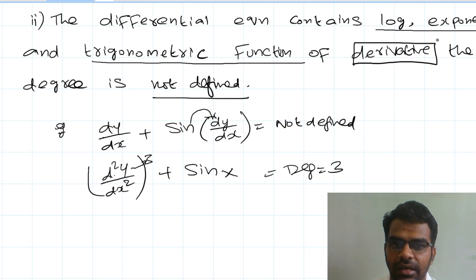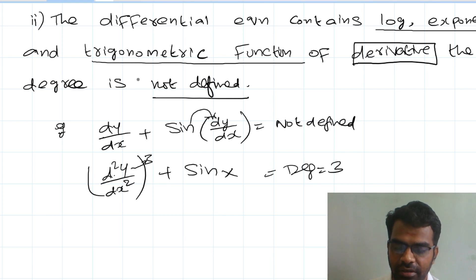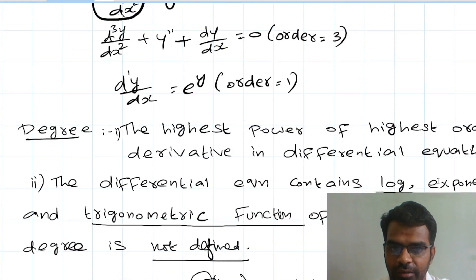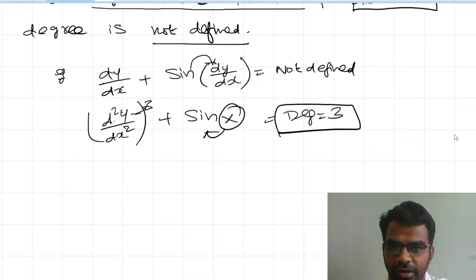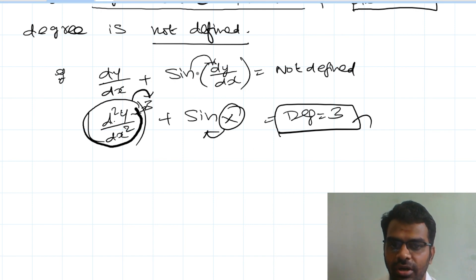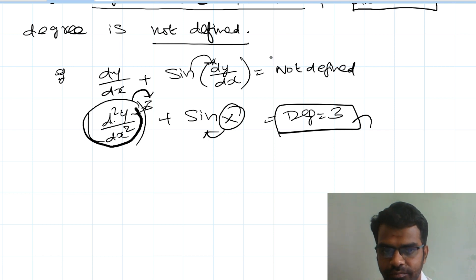In the derivative part of the logarithm and the trigonometric function, degree is not defined. The highest power value is the highest order, and the highest order's power value gives the degree. But log and sin or trigonometric functions — if the derivative is inside them, degree is not defined.